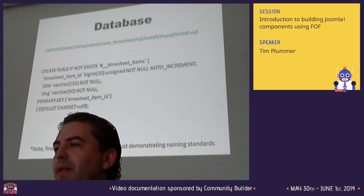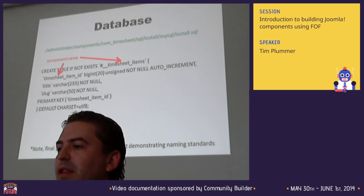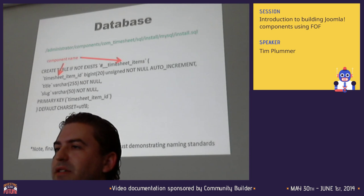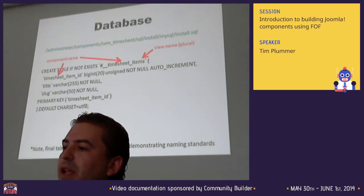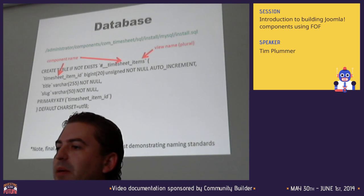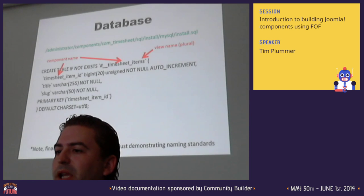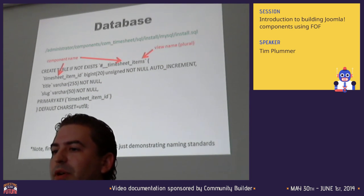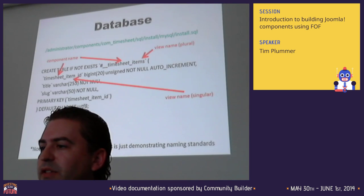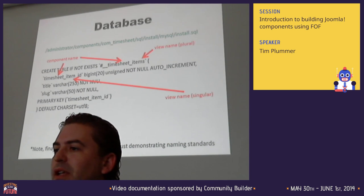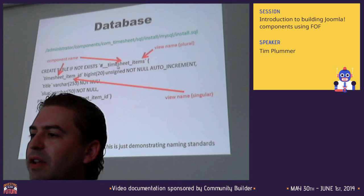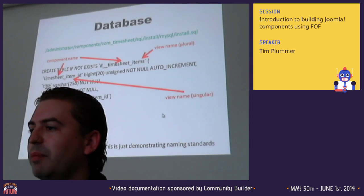Starting with the database - this is where naming conventions are very important. The tables for the component start with the database prefix, then the name of the component - in this case 'timesheet'. After that we have the name of the view in its plural form - in this case 'items'. The first field uses the format: component name, underscore, view name, underscore, ID - using the singular view name, so 'item'. Note that while the table uses 'items' (plural), the ID field uses 'item' (singular), so make sure you use the correct pluralisation.